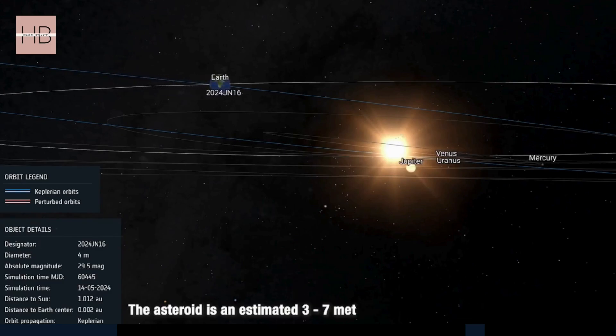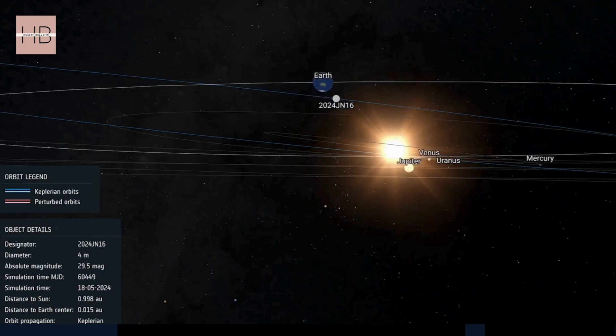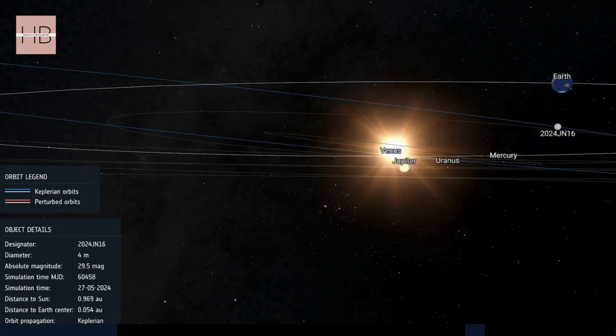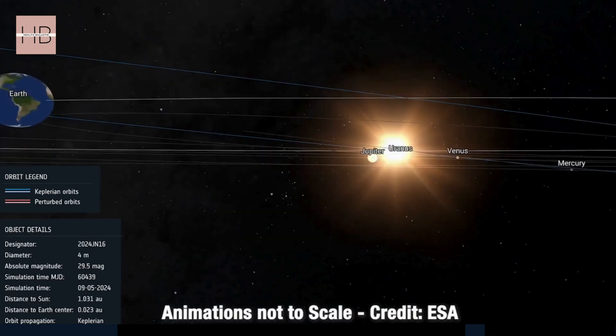These asteroids are of significant size. The first asteroid is hurtling towards Earth at an astounding speed of 63,683 kilometres per hour, according to NASA's Centre for Near-Earth Object Studies. In comparison, the other space rock, 2020 JP10, is even faster, travelling at a staggering 90,000 kilometres per hour.